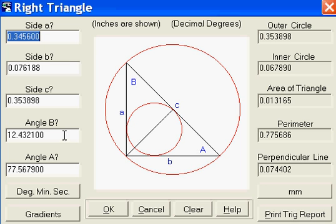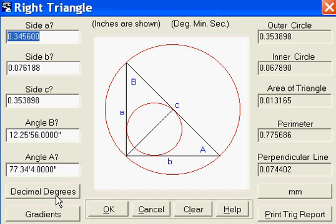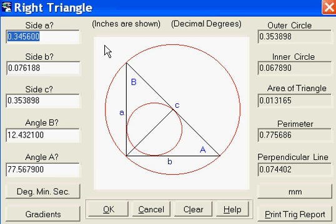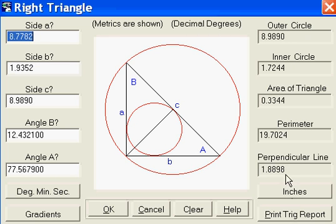You can change these to degrees, angle B, angle A. You can change these from decimal degrees to degrees, minutes, seconds by clicking here. And back to decimal degrees. You'll notice up top here it says inches are shown, decimal degrees. You can click the millimeters and change everything to millimeters that can be changed.